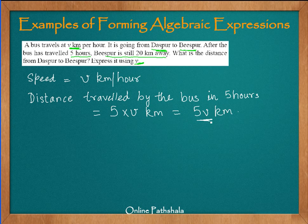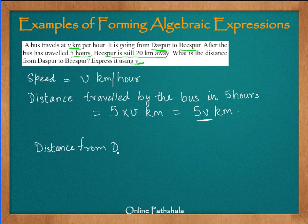This is the current distance the bus has covered. But we know that Bispur is still 20 kilometers away. Therefore, if I add 20 to this number, I get the distance from Daspur to Bispur. So the distance from Daspur to Bispur is equal to 5V plus 20 kilometers.